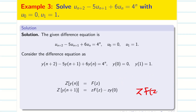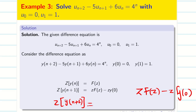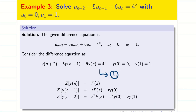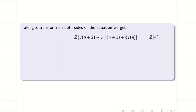Z of y(n+1) equals Z into F(z) minus z into y(0). We know how to find Z of y(n+2) — just multiply Z on the above equation, we get Z squared capital F(z) minus z squared y(0) minus z into y(1). Taking Z transform on both sides and applying these formulas, we can get an equation in terms of F(z). Let us do this.